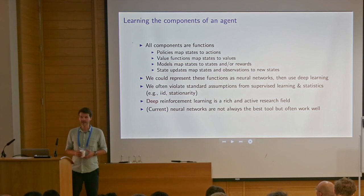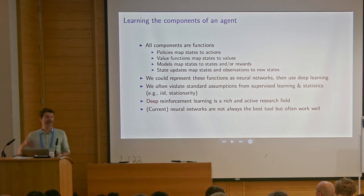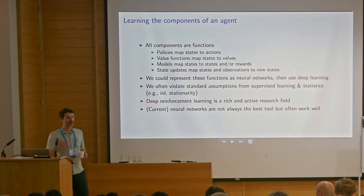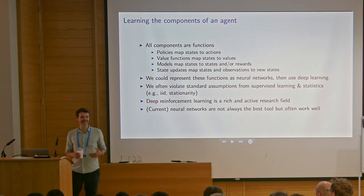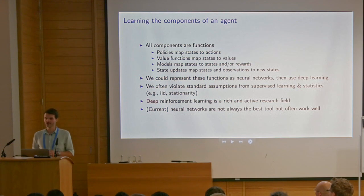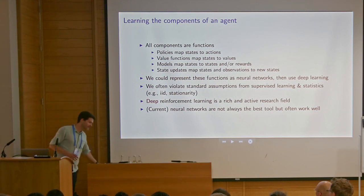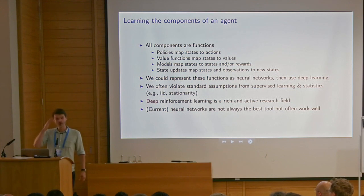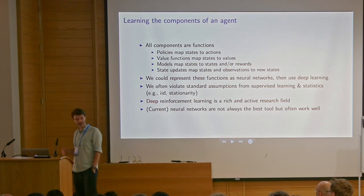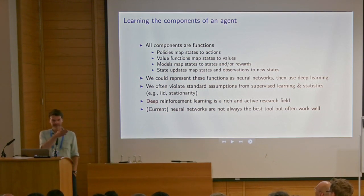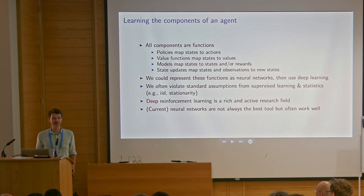One clear way in which we violate these is when we try to do prediction and control simultaneously — we're trying to improve our policy while trying to predict things about the future. This means our predictions, which might be conditional on our current policy, will become somewhat outdated — they become stale and might not be completely accurate anymore. The data that comes in is not stationary because it depends on the current policy. Moreover, the data coming in is not IID — it'll be sequential data, so data from one time step to another might be very correlated. Standard regression methods may or may not deal well with that.